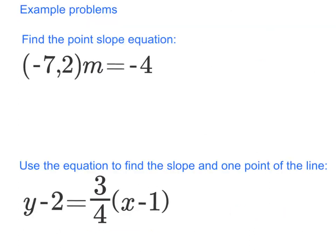Okay, so let's look at a couple example problems. In this first example, it tells us to find the point-slope equation using this is our point and this is our slope.